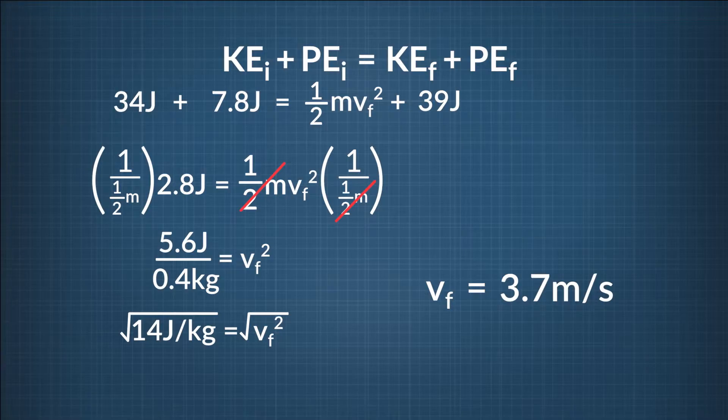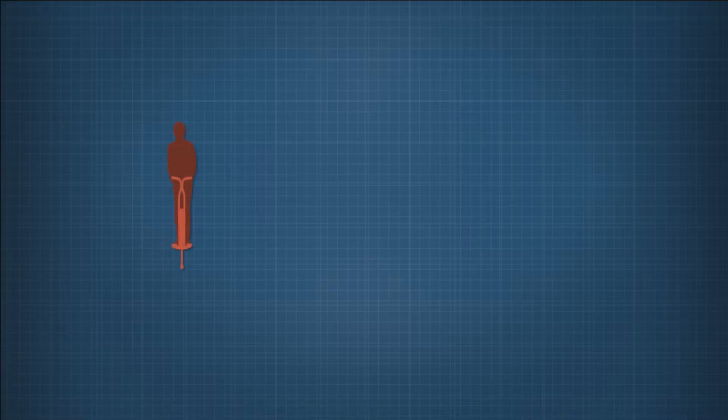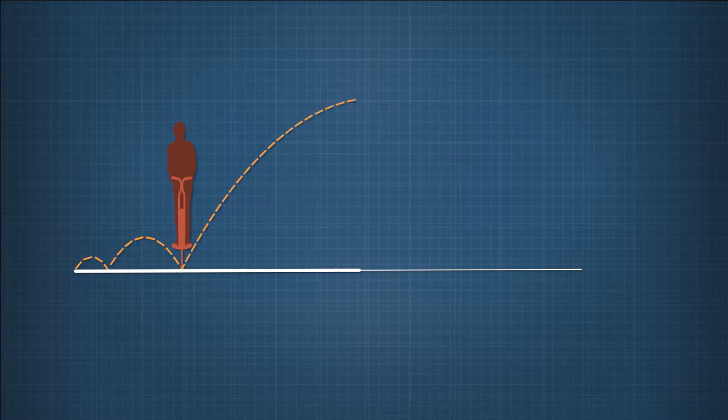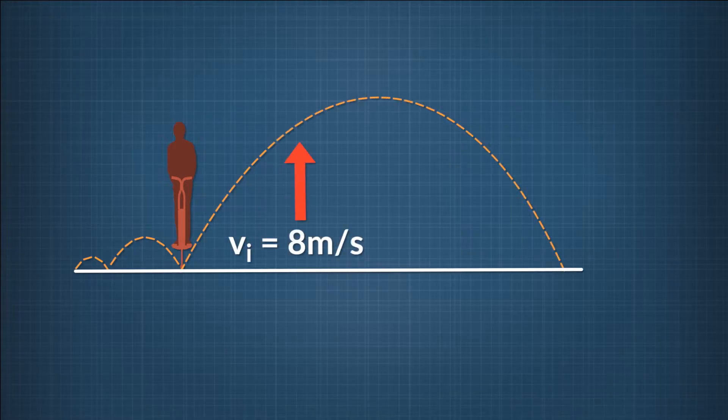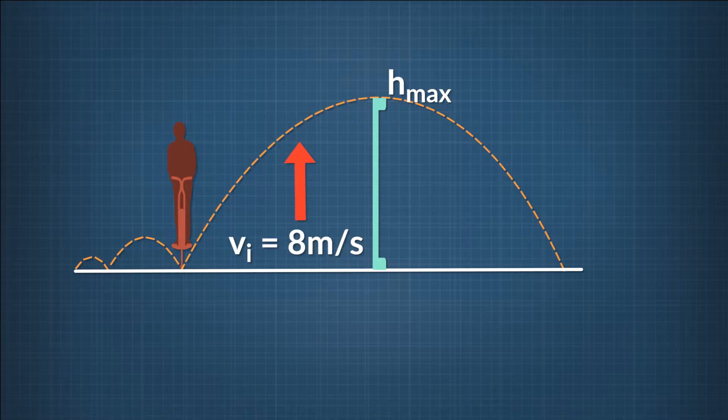That's how fast conservation of energy says the football is moving when it's 10 meters above the ground. Let's try another question, but this time we'll figure out how to solve for a potential energy term. As a finalist in the National Pogo Stick High Jump Competition, you know that if you can reach a height of 3 meters off the ground, you'll win first prize. After months of training, you are able to achieve an upward velocity of 8 meters per second as you bounce off the ground. Will this upward velocity be enough to reach your target height and win the championship?